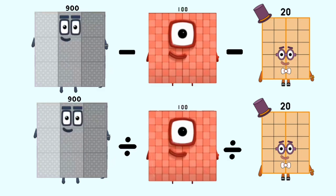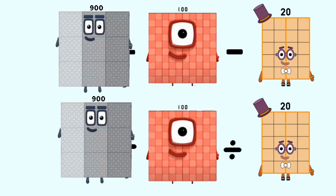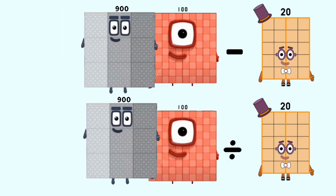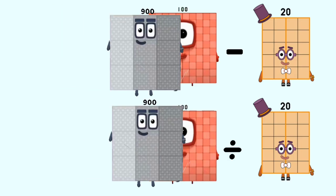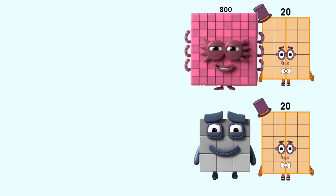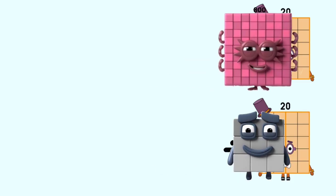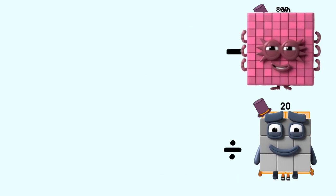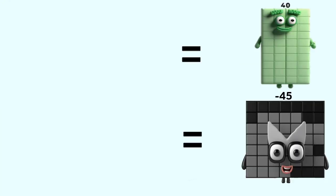Number blocks 900 minus 100 and divided by 100 equal 800 and 9. Number blocks 800 and 9 minus 20 and divided by 20 equal 40 and negative 45.